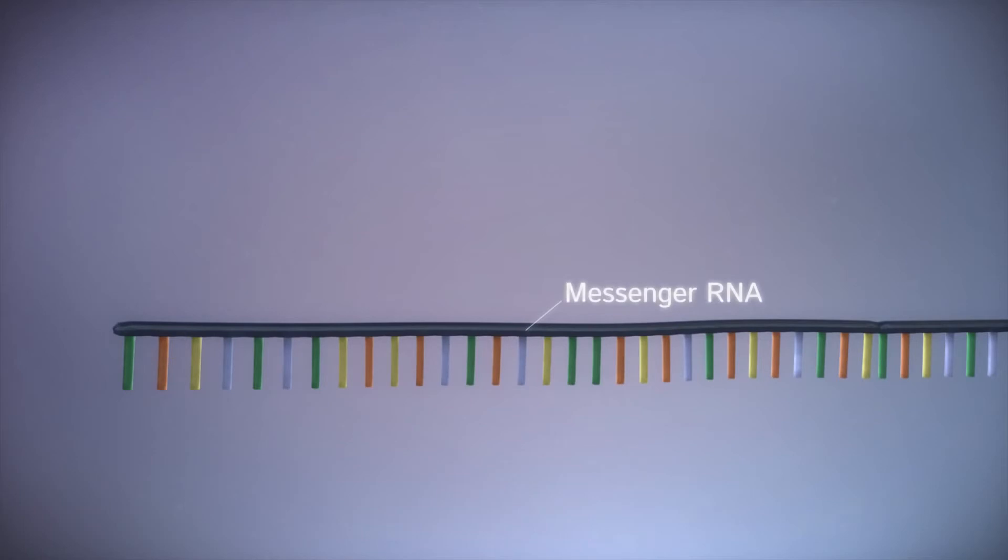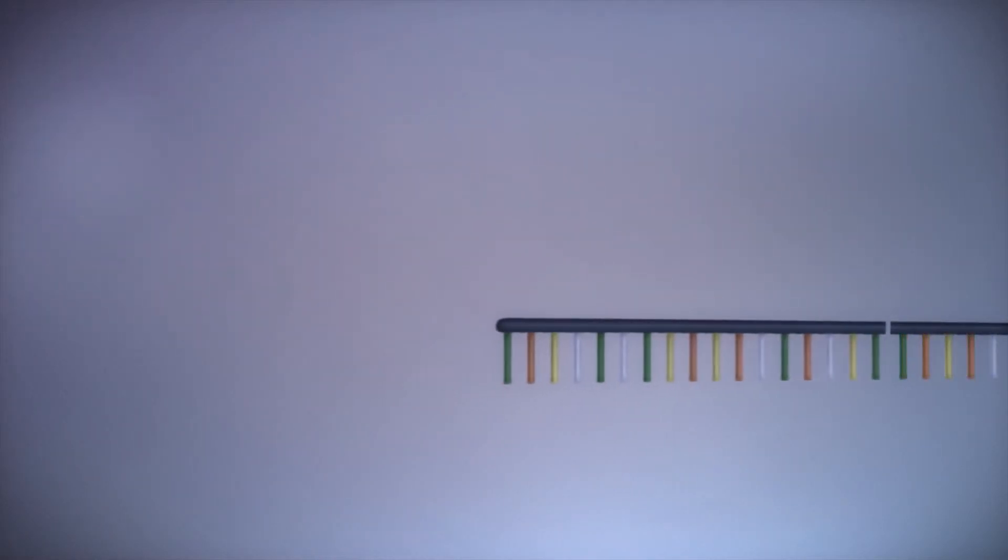Before the messenger RNA can be used as a template for the production of proteins, it needs to be processed. This involves removing and adding sections of RNA.